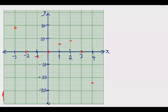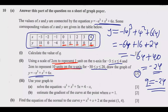Now join the points using a smooth curve. I'll use a blue pen — the curve comes up on this side, then comes down, joining the points smoothly. That gives us the sketch of the cubic curve, which earns the 3 marks for drawing the graph.